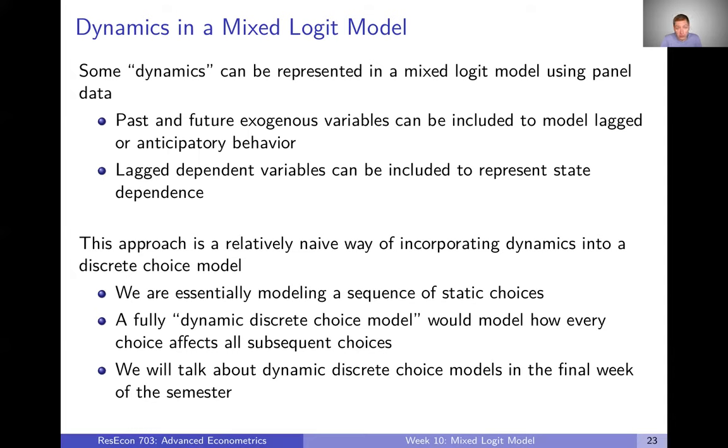But really this is a relatively naive way of incorporating dynamics into a discrete choice model. We're essentially thinking of a series of static choices here. And if we wanted to really represent a fully dynamic discrete choice model, we'd want to model how every choice affects subsequent choices or, to put that differently, if you know that your choice today is going to affect things in the future, then you want your choice today to include the fact that that sets you up for different states of the world in the future. And we're kind of going beyond what we want to talk about here. I just want to point out that if you're really concerned about the dynamics of your mixed logit model, then that's probably a different kind of model called a dynamic discrete choice model, which gets more complicated, but we will talk about that in the last week of the semester.